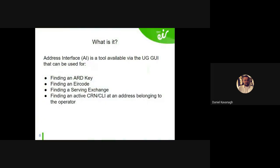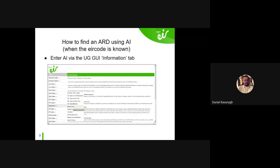AI — the Address Interface tool — is available in the UG GUI. It can be used for finding an RT, finding an air code, finding a serving exchange. You might not always need it, but it's handy to have. It can also be used for finding an active CLI or CRN address belonging to an operator — so if I'm Operator A and I log into AI, I can see the phone number belonging to that address. Now I'll show you in more detail.